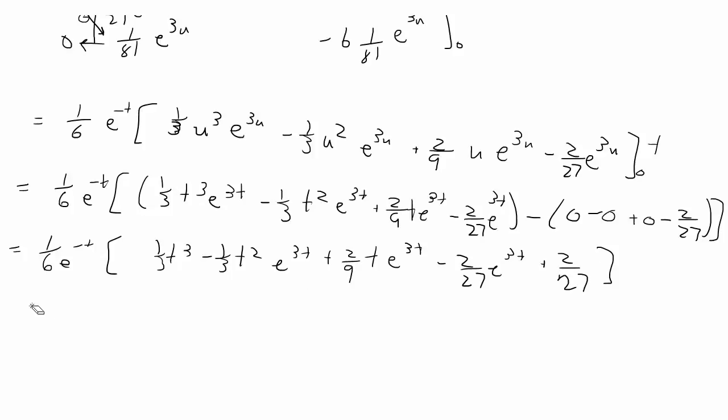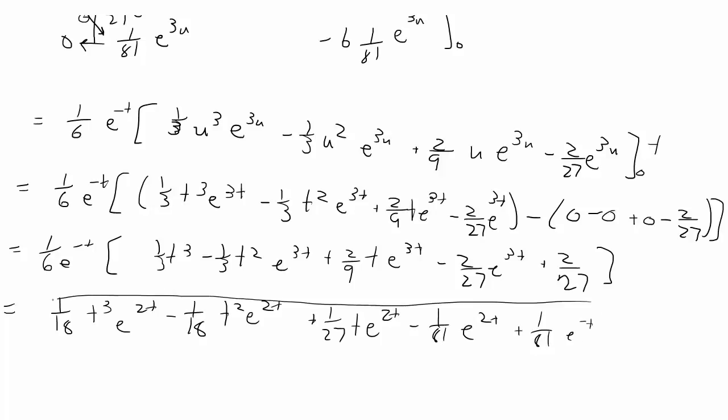And then you could probably leave that as the final answer. But if you distributed the first term in the front of the brackets you would get your final answer. That would be 1/18 t^3 e^(2t) minus 1/18 t^2 e^(2t) plus 1/27 t e^(2t) minus 1/81 e^(2t) plus 1/81 e^(-t). And that's your final answer.